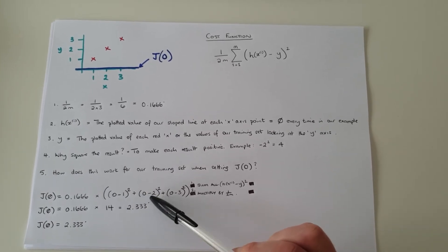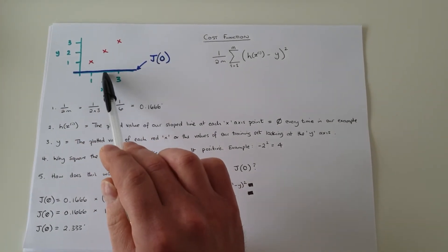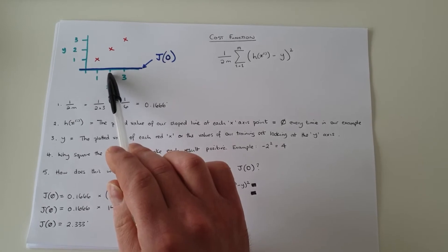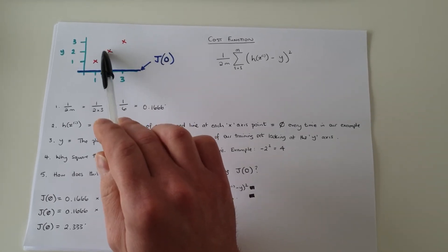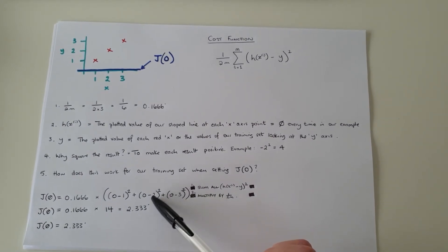We'll do the same for number, our second iteration. h of x is at zero, two. y is at two. So it's zero minus two. We square that, it gives us four.